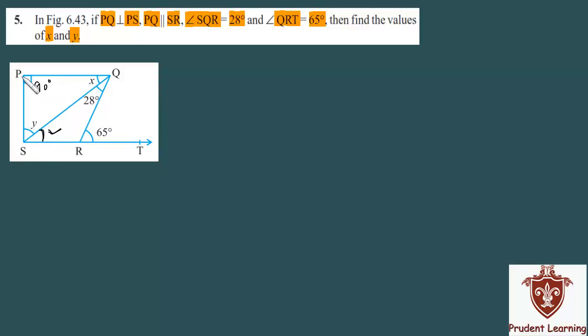If we determine angle x, then look at triangle PQS. In this triangle, you can see a 90 degree angle, and x will be the same as the alternate angle. Using the angle sum property of this triangle, we can find y.